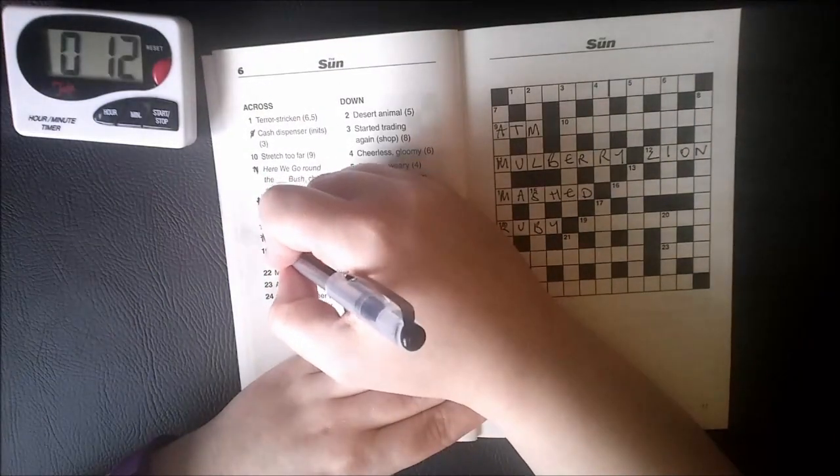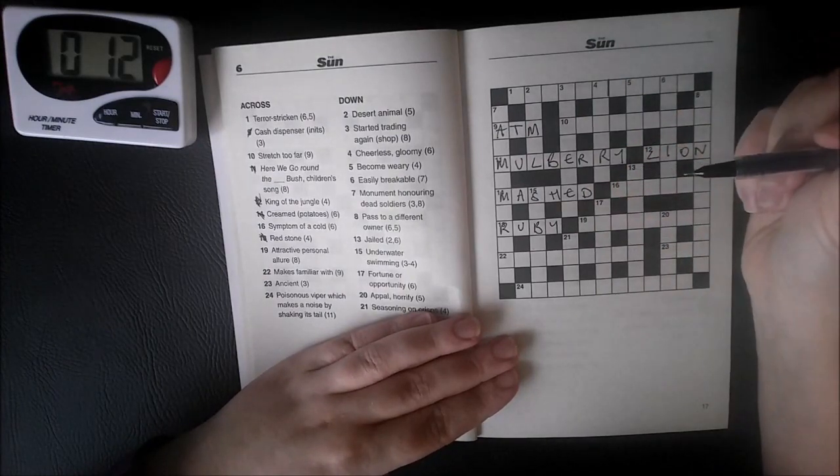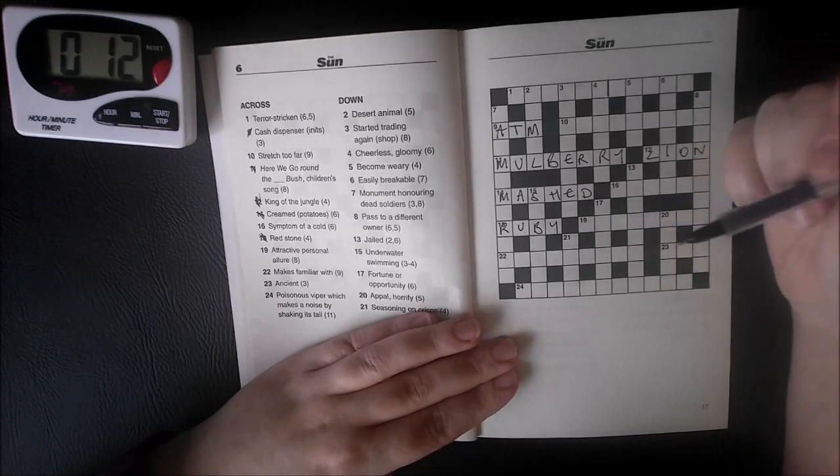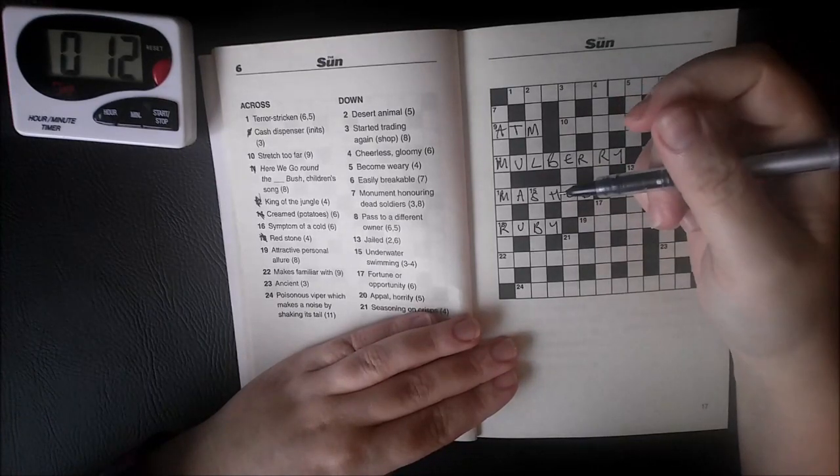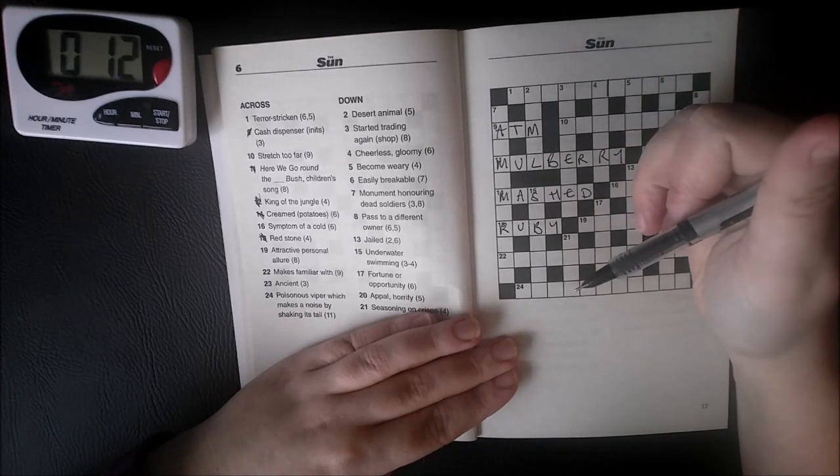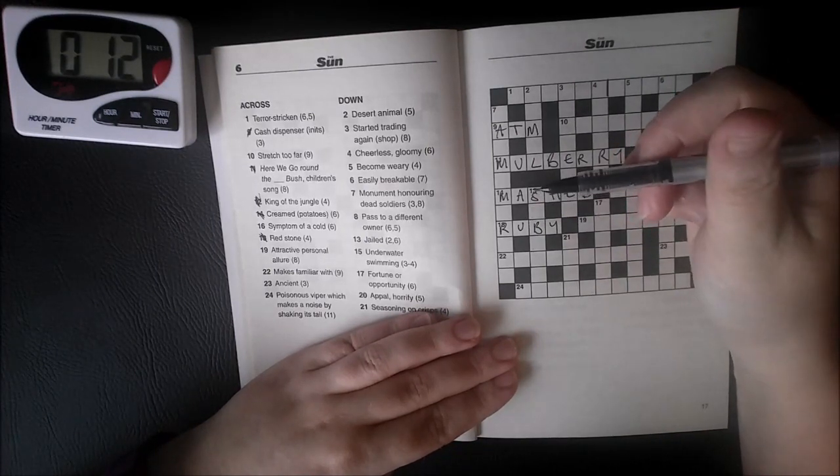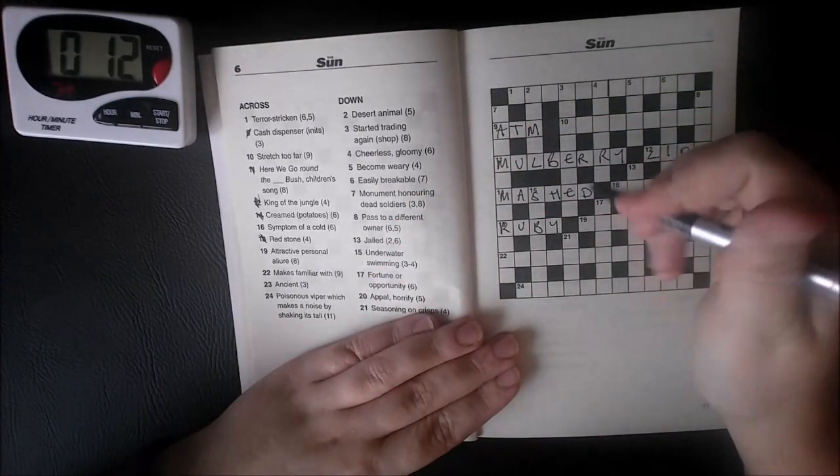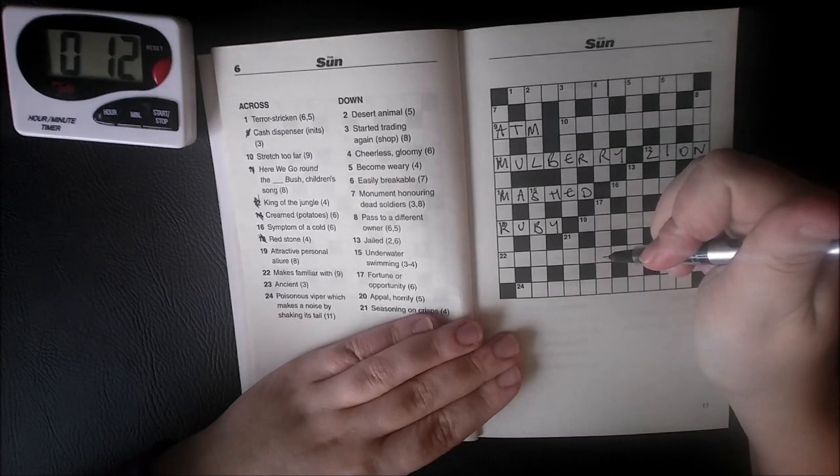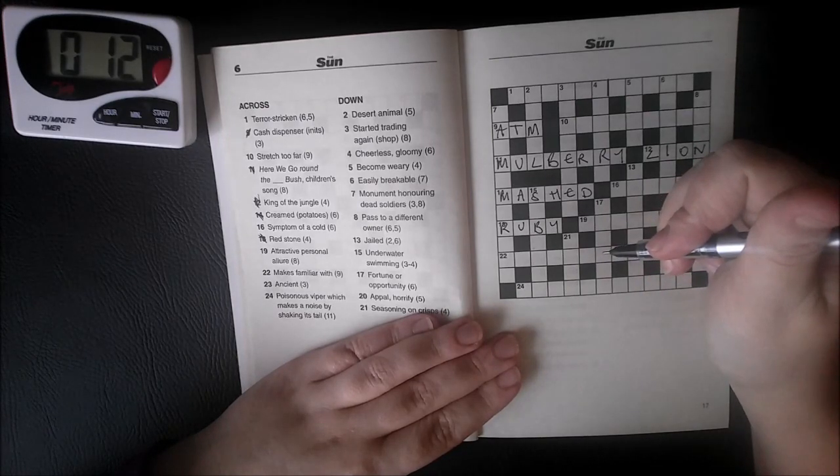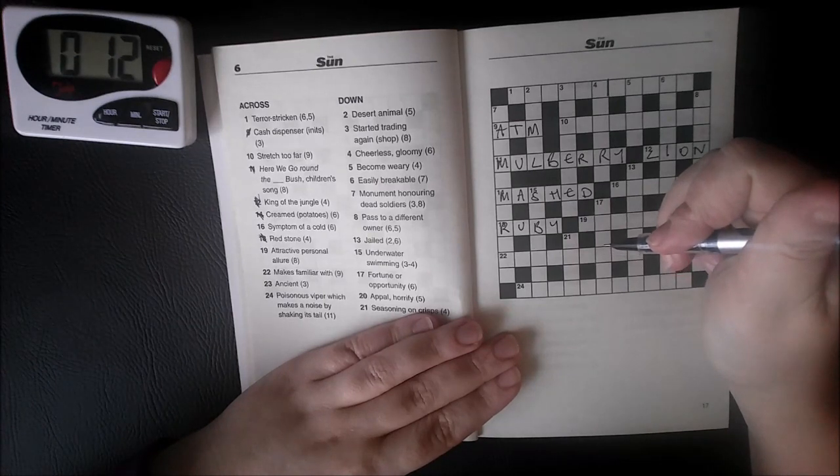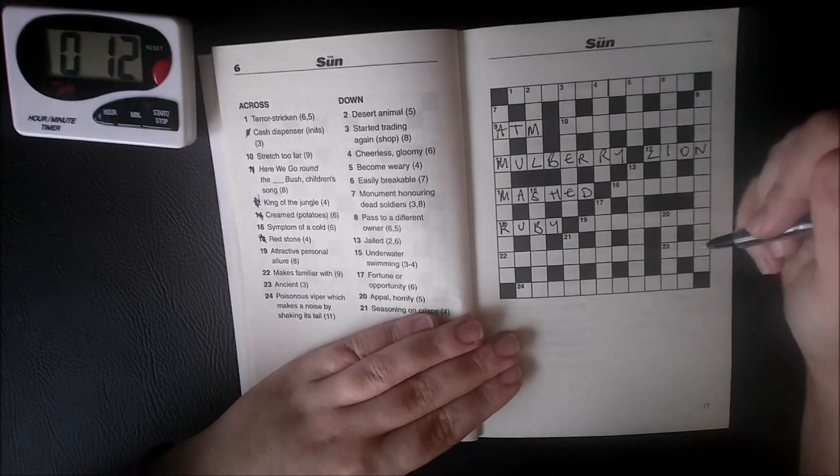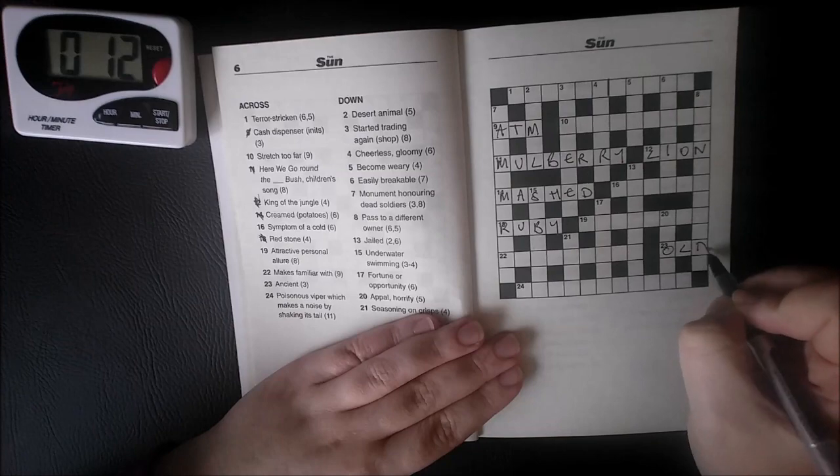Attractive personal allure. Ah, sniffing like that's not gonna help. Attractive personal allure, a certain je ne sais quoi. I have no idea, we'll come back. Makes familiar with, 22 across. Makes familiar with, as in gets to know, understands. I don't know. Ancient, 23: old. Do we think that one might be old? We'll try it. No, yeah, D.